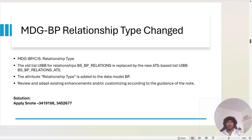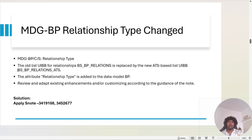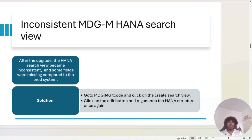The first issue we came across is the MDG BP relationship — the UIBB component has changed from BS_BP_RELATIONS to ATS_BASE_LIST_BS_BP_RELATIONS_ATS. If you are using the relationship tab, you are supposed to use this newer UIBB from the newer version. Please apply the corresponding SAP note.